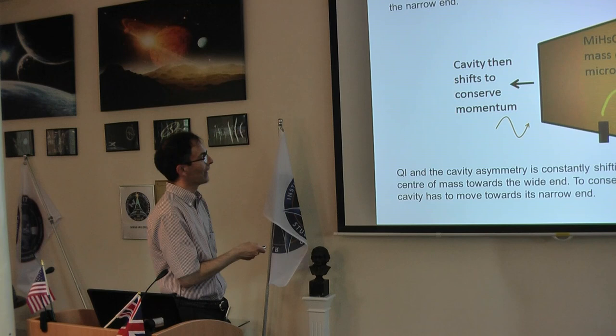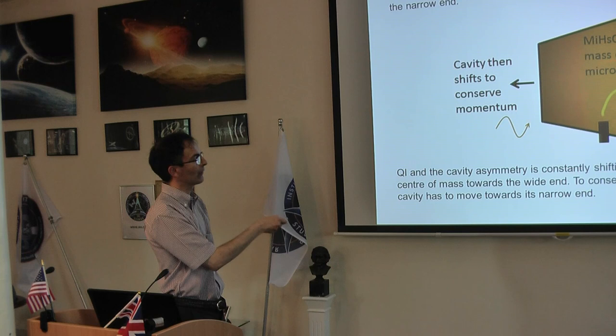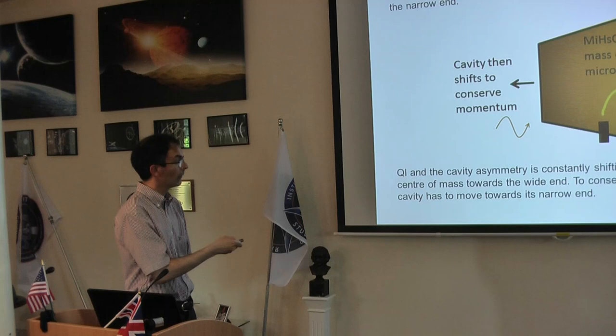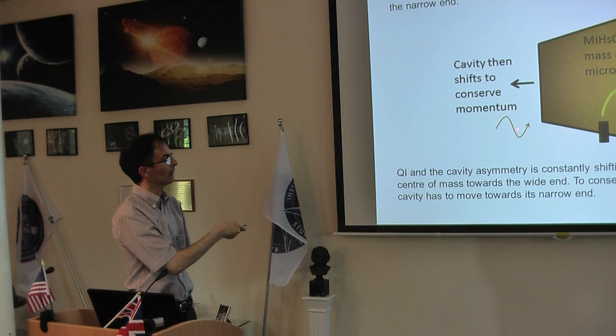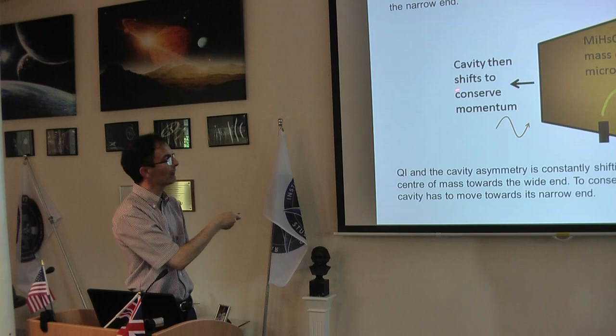Quantized inertia can predict it quite well. And the reason is that when the microwaves are put into the cavity, they bounce around very fast. The acceleration is very large, so the Unruh waves are short enough to actually interact with the cavity. More of them are allowed at the wide end than at the narrow end, so the distance is wider. So, you get more Unruh waves here, fewer here. You get an Unruh wave gradient, if you like, pushing the EmDrive towards its narrow end.